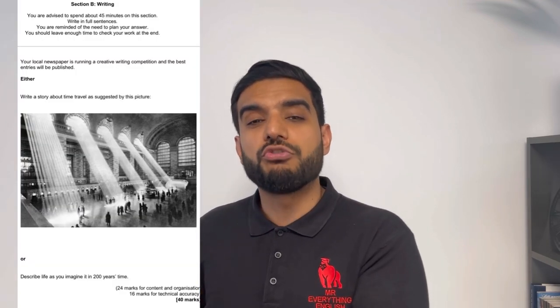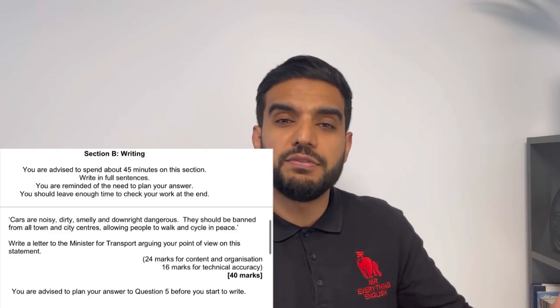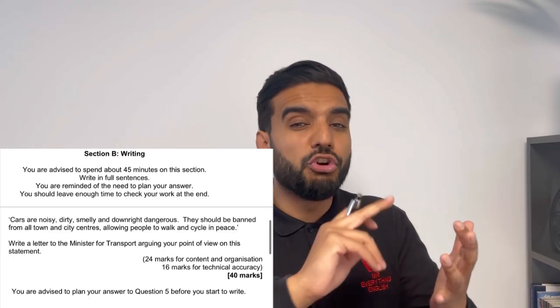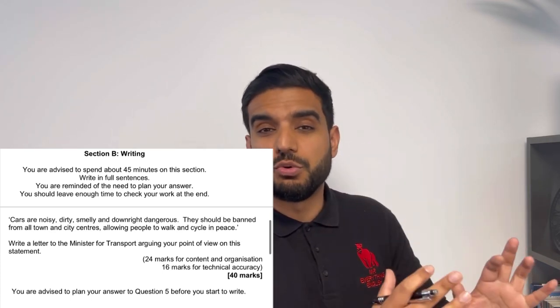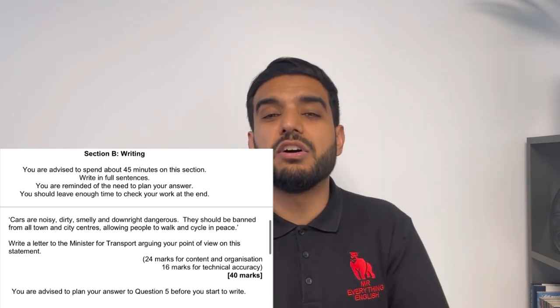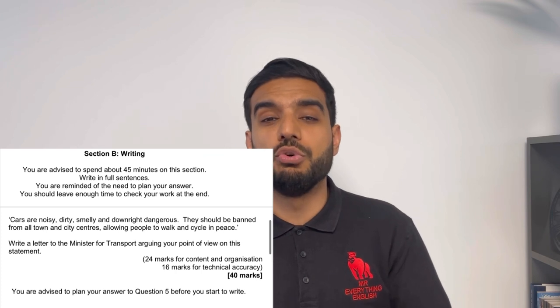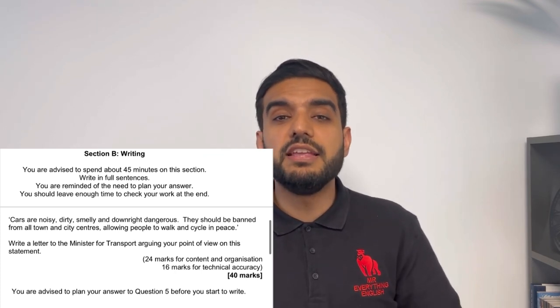Then we move on to the big ones — Question Five. Both Question Fives are worth 40 marks, which is 50% of their respective exams. We spend 45 minutes and aim to write two to three sides. Paper One Question Five asks you to either describe a picture or write a story. Paper Two Question Five asks you to write a speech, letter, article, blog, and so on, normally giving a statement and asking you to argue for or against, or give your opinion.